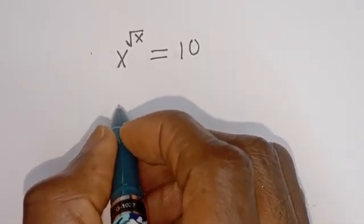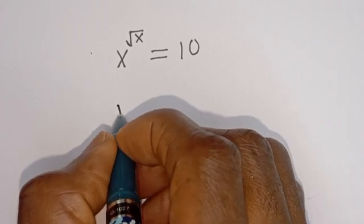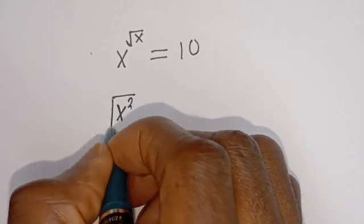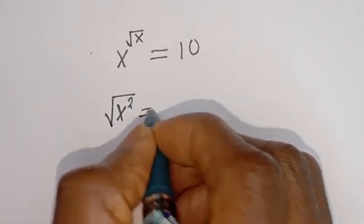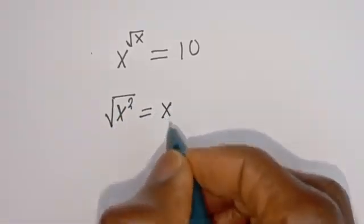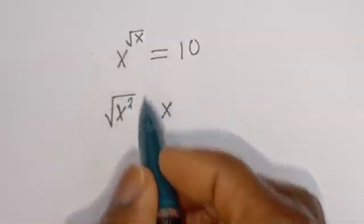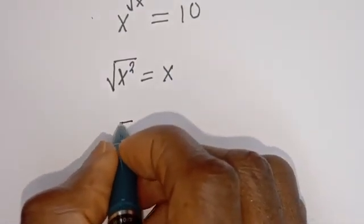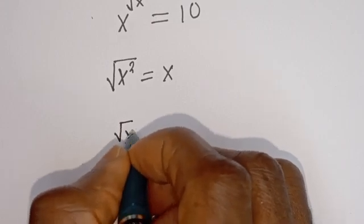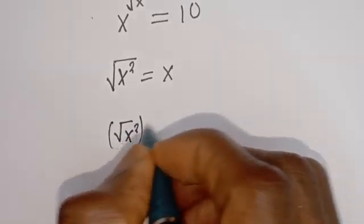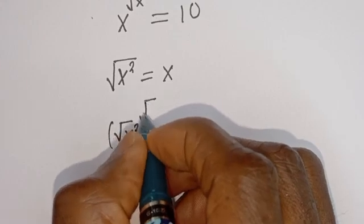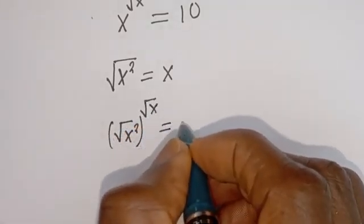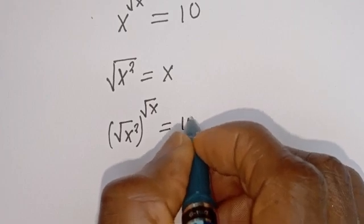Take note that if you have s squared under a square root, this is equal to s. Therefore, the equation can be rewritten as: square root of s squared, to the power of square root of s, is equal to 10.